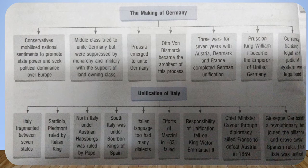Unification of Italy: Italy was fragmented between seven states. Sardinia-Piedmont was ruled by the Italian king. North Italy was under Austrian Habsburgs and was ruled by the Pope. South Italy was under the Bourbon kings of Spain. The Italian language too had many dialects. The efforts of Mazzini in 1831 failed. Responsibility of unification fell on Victor Emmanuel II. Chief Minister Cavour through diplomacy allied France to defeat Austria in 1859. Giuseppe Garibaldi, a revolutionary, joined the alliance and drove away the Spanish rulers. Thus, Italy was unified.